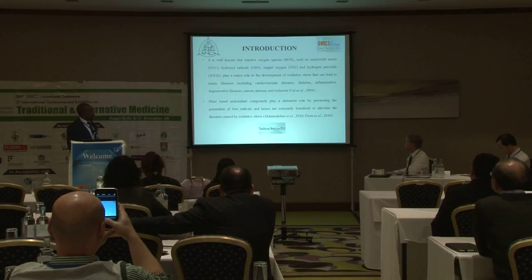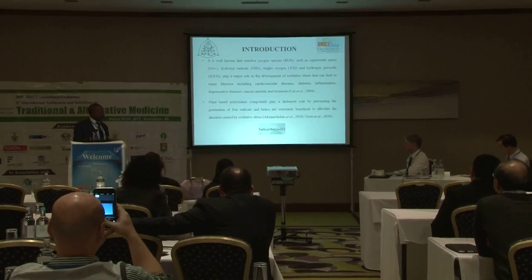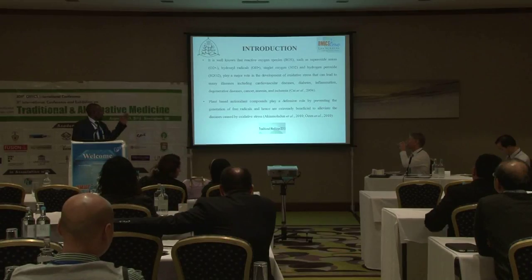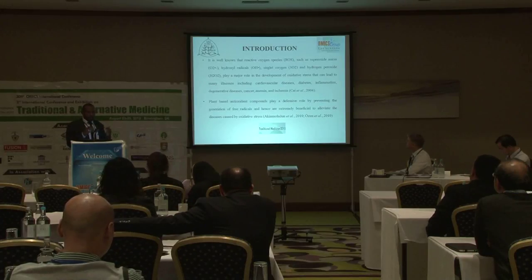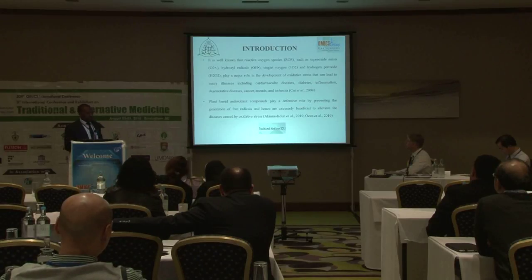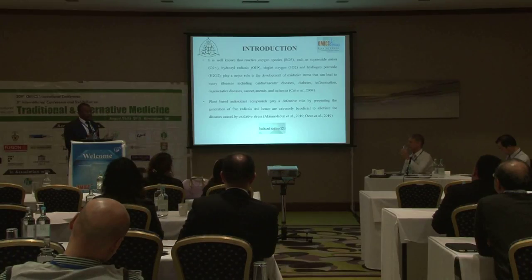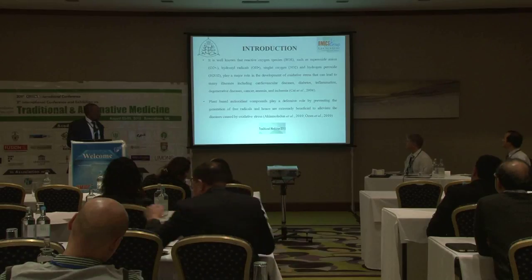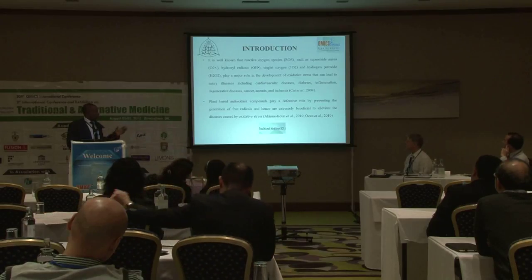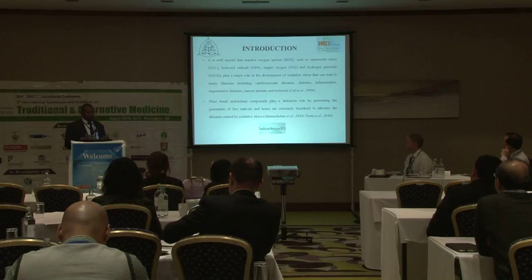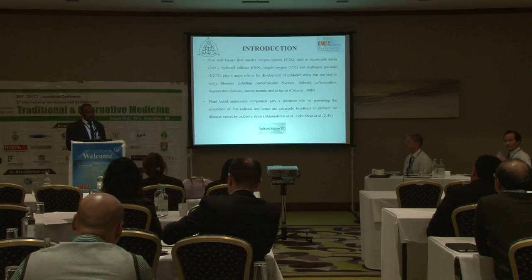Reactive oxygen species are known to cause a lot of diseases, and these include the superoxide anion, hydrogen peroxide, and singlet oxygen. Under normal physiological circumstances, they regulate body function. However, if this is dysregulated during increased inflammation or other conditions, they cause deleterious effects on the body. Plant-based antioxidant compounds play an important role in preventing generation of free radicals by scavenging these free radicals, and can alleviate a lot of diseases caused by this generation of free radicals.